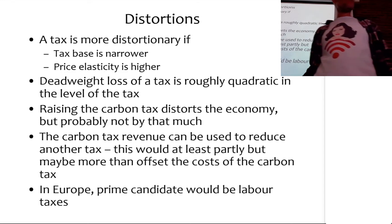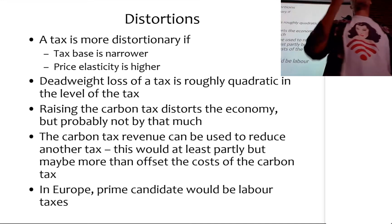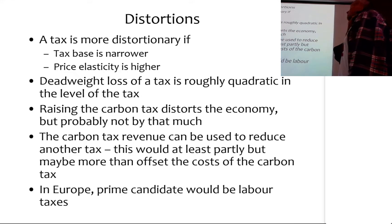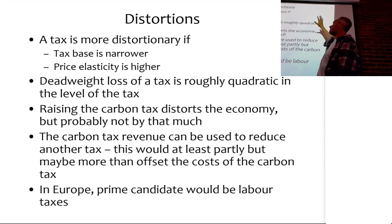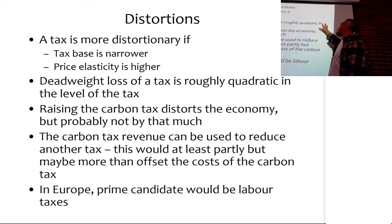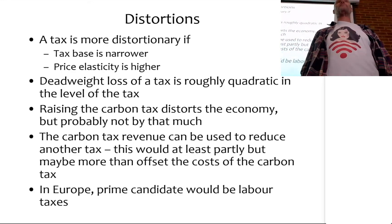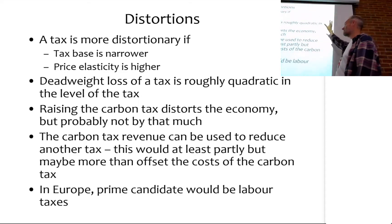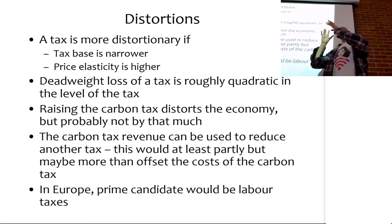The cost of the tax - the distortionality, also called the deadweight loss - is the loss of aggregate welfare, and as a rule of thumb it is roughly quadratic in the level of the tax. Now let's compare a carbon tax to an income tax. A carbon tax has a broad base - it essentially includes everybody in the economy. A labor tax is narrower: around half the population pays income tax, given young people, pensioners, and low earners who are exempt.